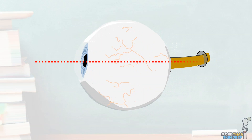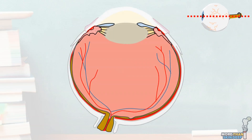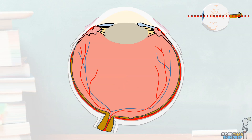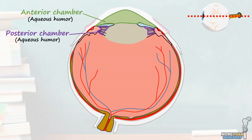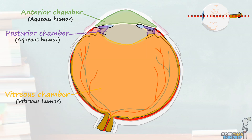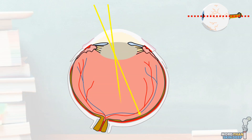Here you can see an image of the human eye removed from the orbit. The sagittal diameter measures 24 to 25 millimetres and the transverse diameter 24 millimetres. As you can see, the eye structure is more dome-shaped than round. It can be divided into two parts: the anterior part, which contains aqueous humour and is further subdivided into the anterior and posterior chambers, and the posterior part, which contains vitreous humour. Light enters through the anterior surface of the eye and is refracted towards the posterior surface, to be converted into nerve impulses.